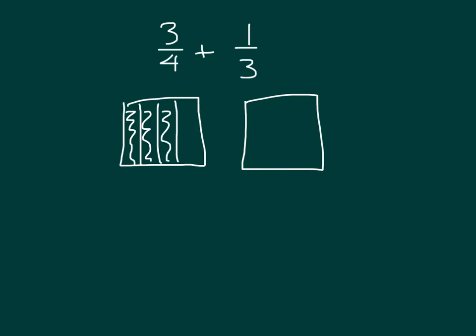And we're putting that together with 1-3rd. For 1-3rd, instead of drawing vertically, we'll draw horizontally. We'll divide it into three parts — so there are two lines there — and we're looking at one of those thirds. So there is 1-3rd, and there is 3-4ths.